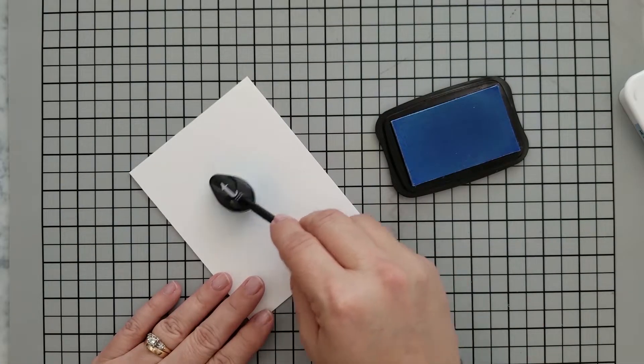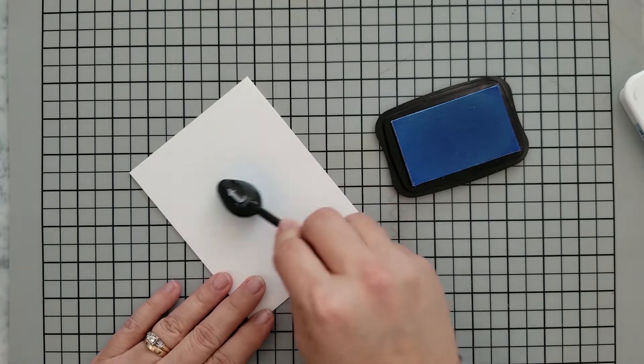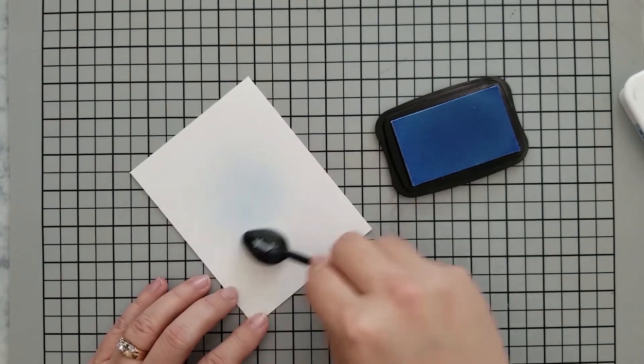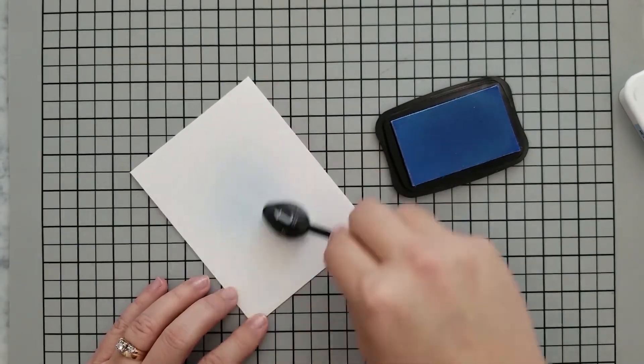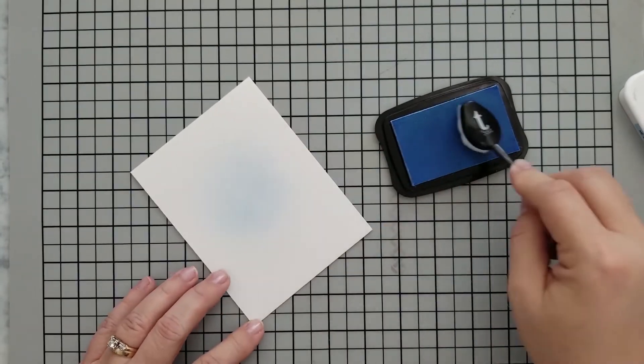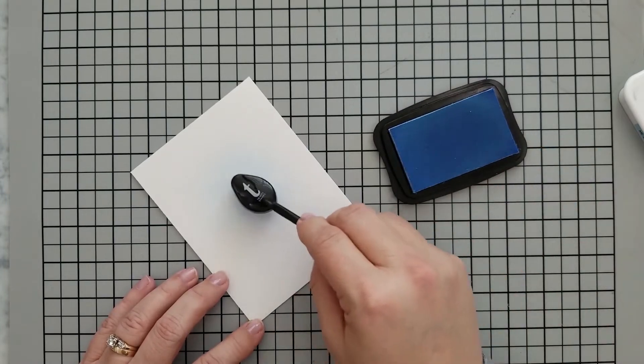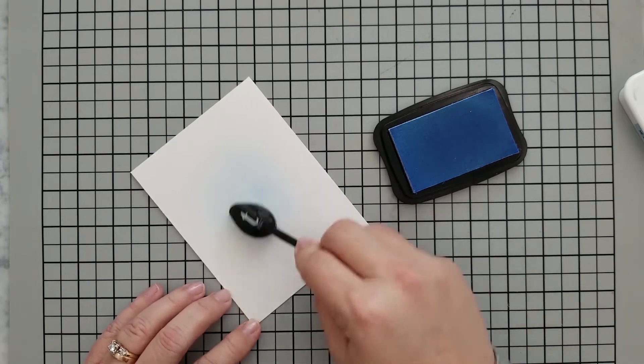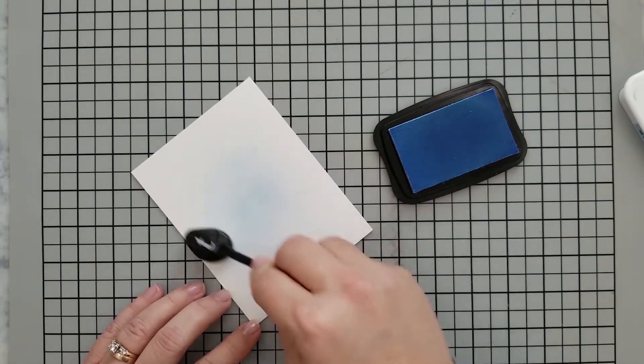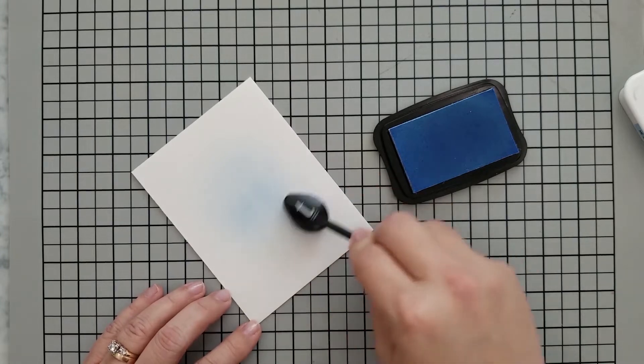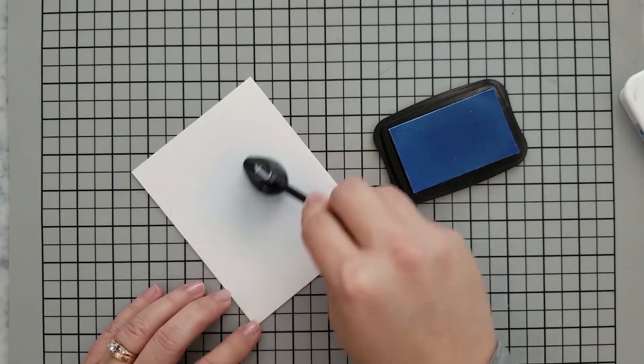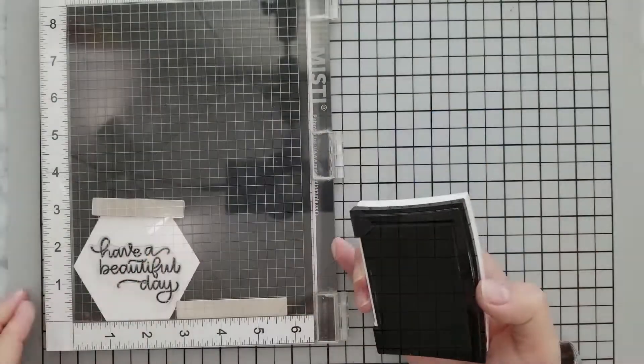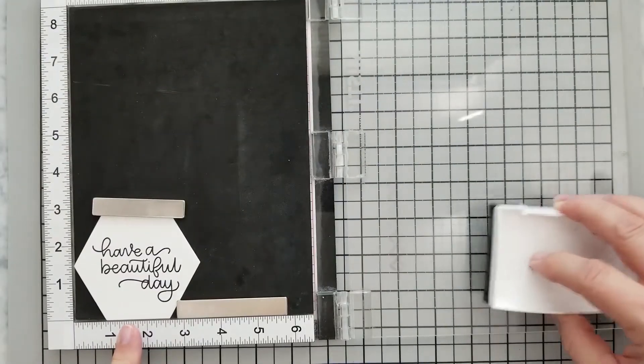With a 4.25 by 5.5 inch card base, I'm going directly to the card with Summer Sky Memento ink using a blender brush. If you're comfortable using a sponge applicator, by all means please do that. We're starting in the center, laying down some Summer Sky and working our way out, lightening that ink as we move out towards the edges. We want to fade it out as we move towards those edges.